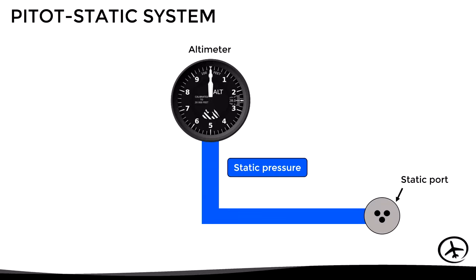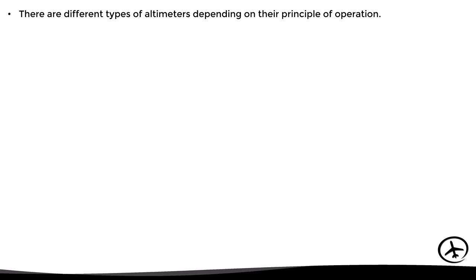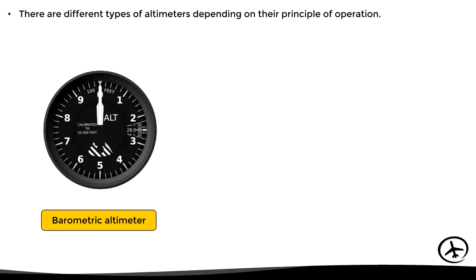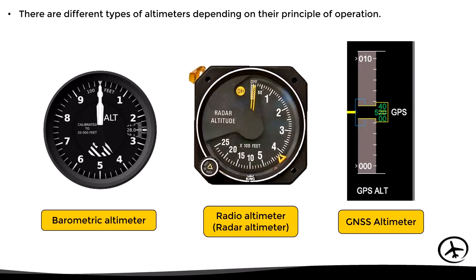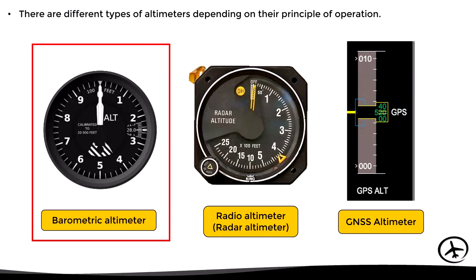Before continuing, we should mention that there are different types of altimeters depending on their principle of operation. First, we have the barometric altimeter, which uses barometric pressure to give its reading. Then we have the radio altimeter or radar altimeter, which uses radio waves to measure height in relation to the surface. And finally, there is the GPS or GNSS altimeter, which uses satellite-derived geometrical data to determine altitude.